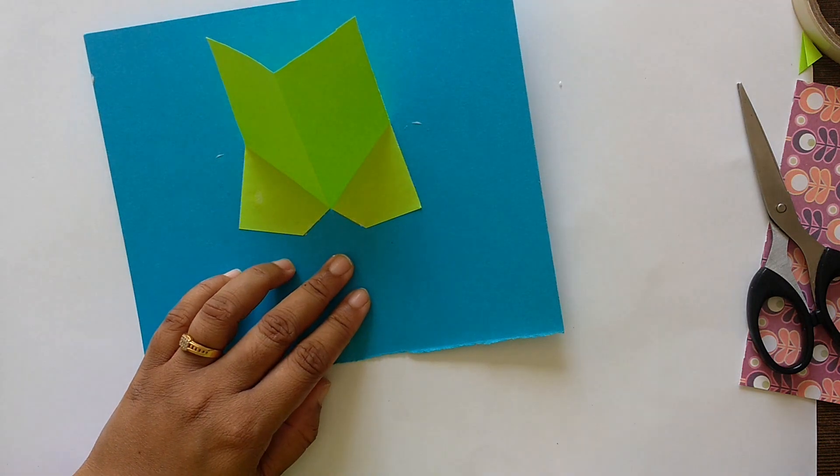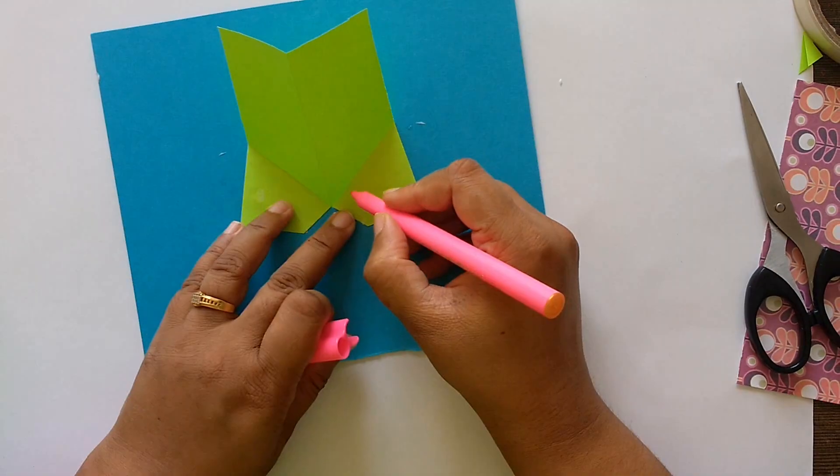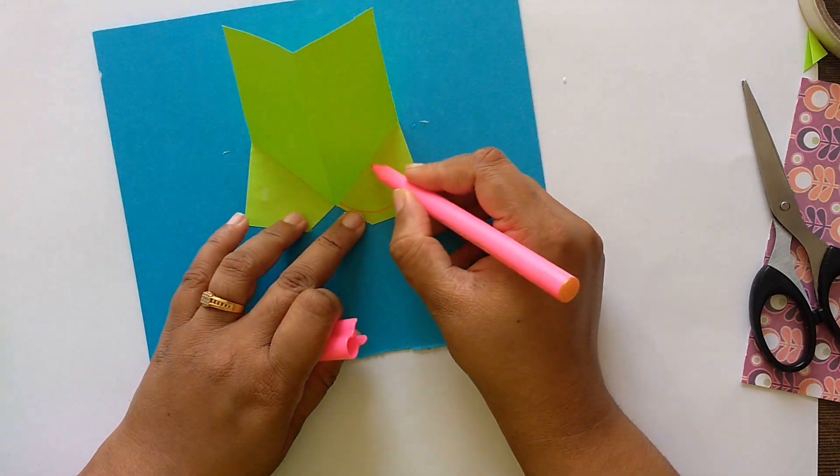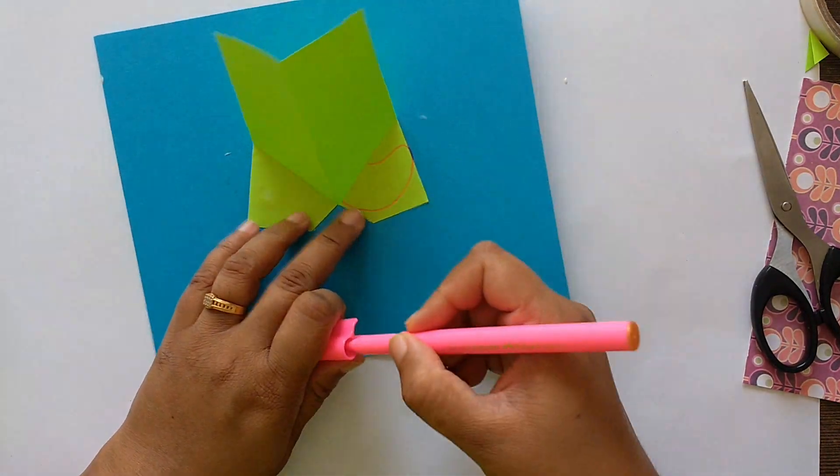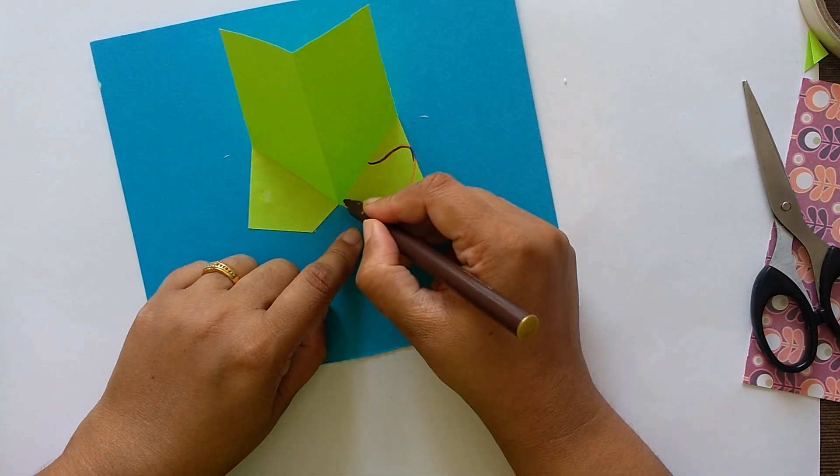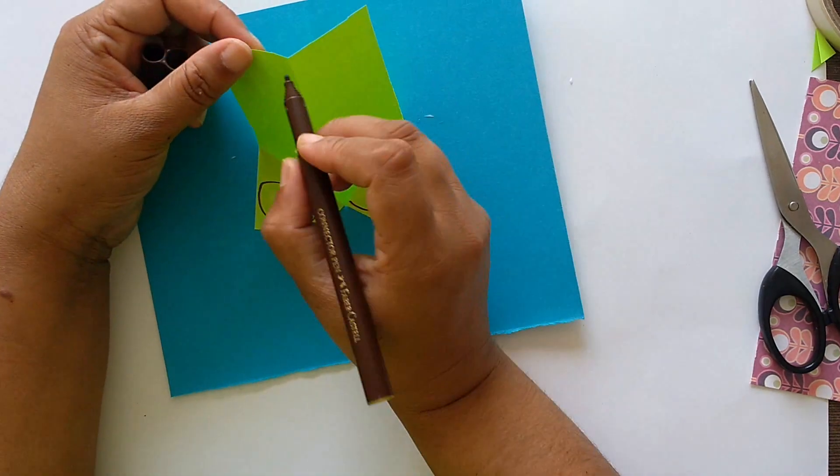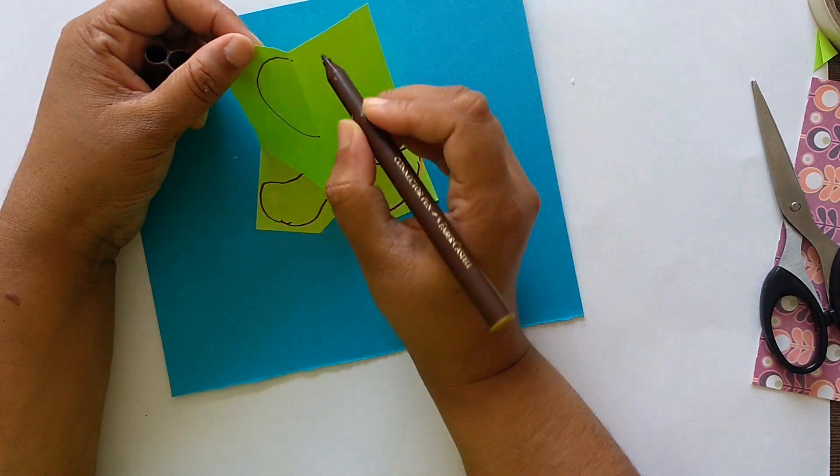Now it is the area. Now this part, this part will be the legs of your baby. Like this, this will be the legs of your baby, and on this part we'll draw a face.